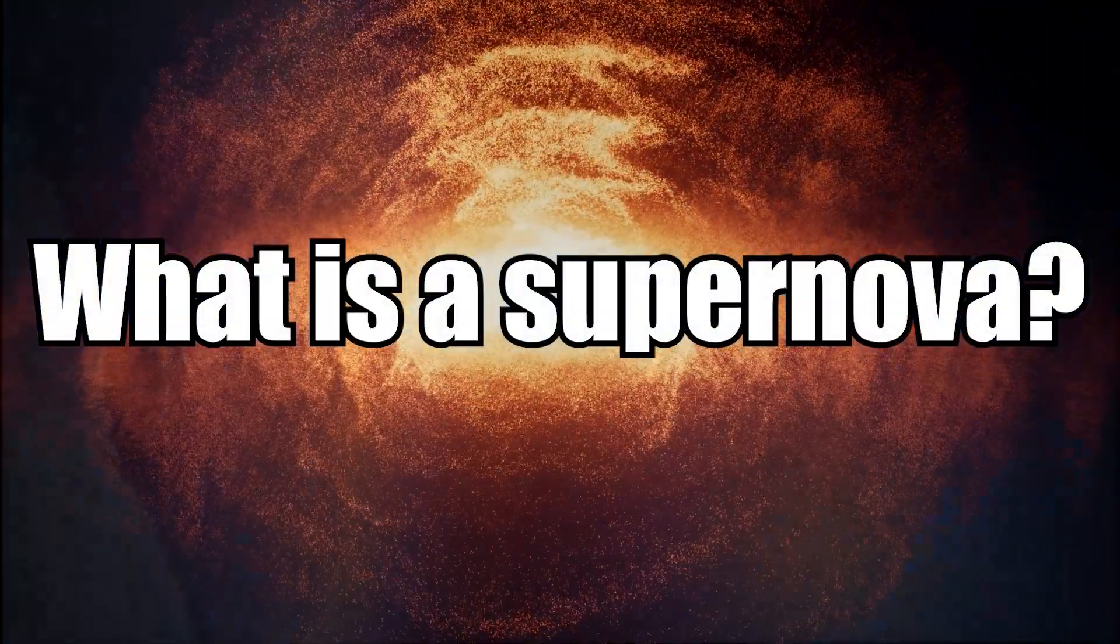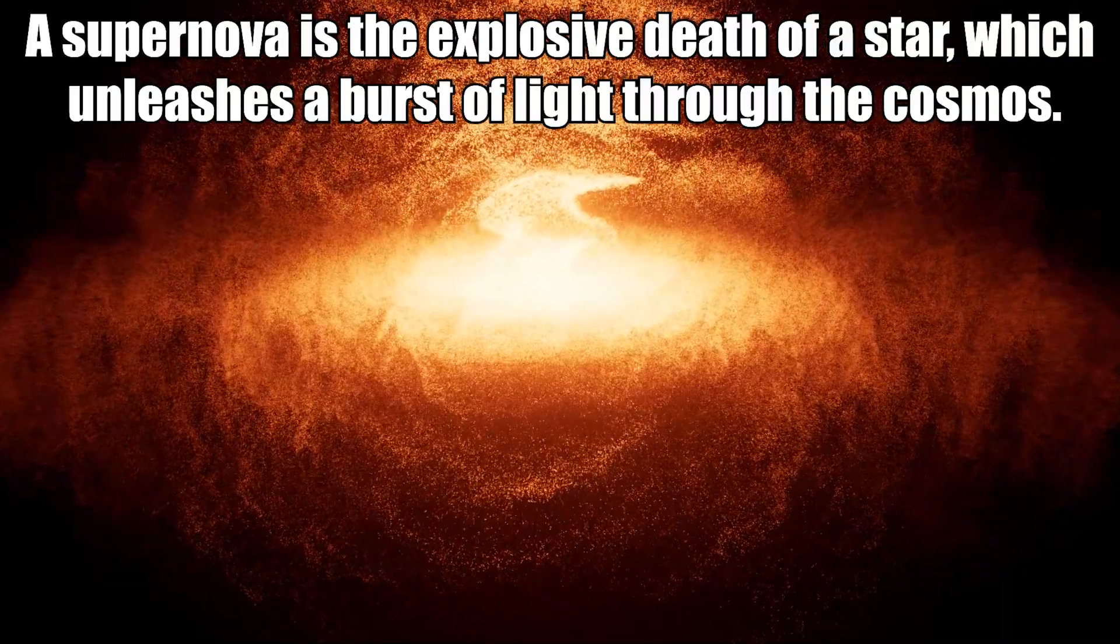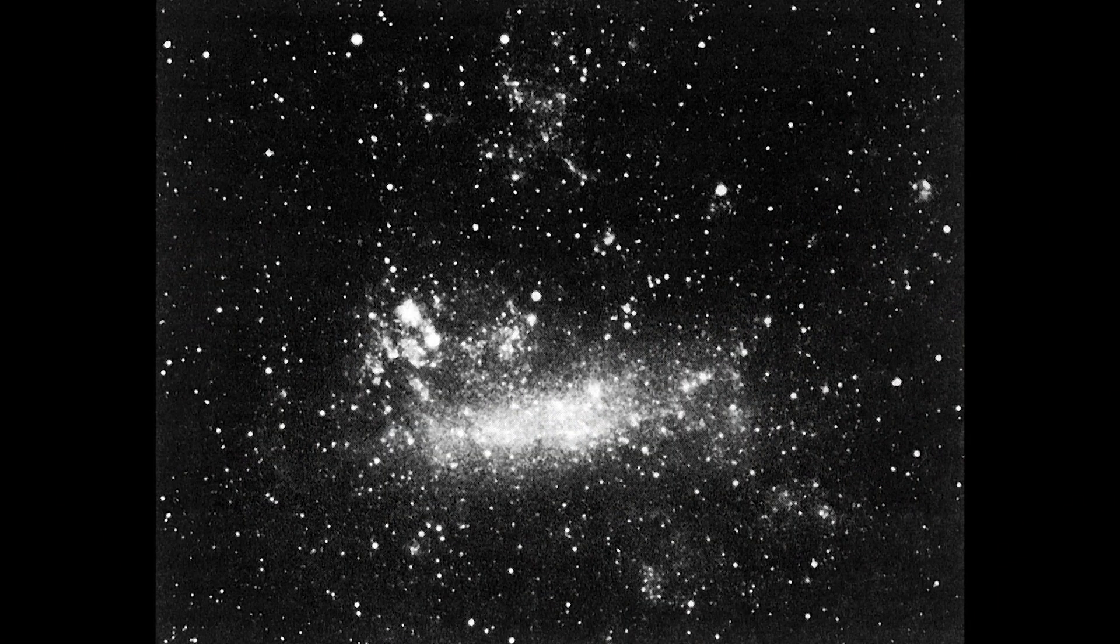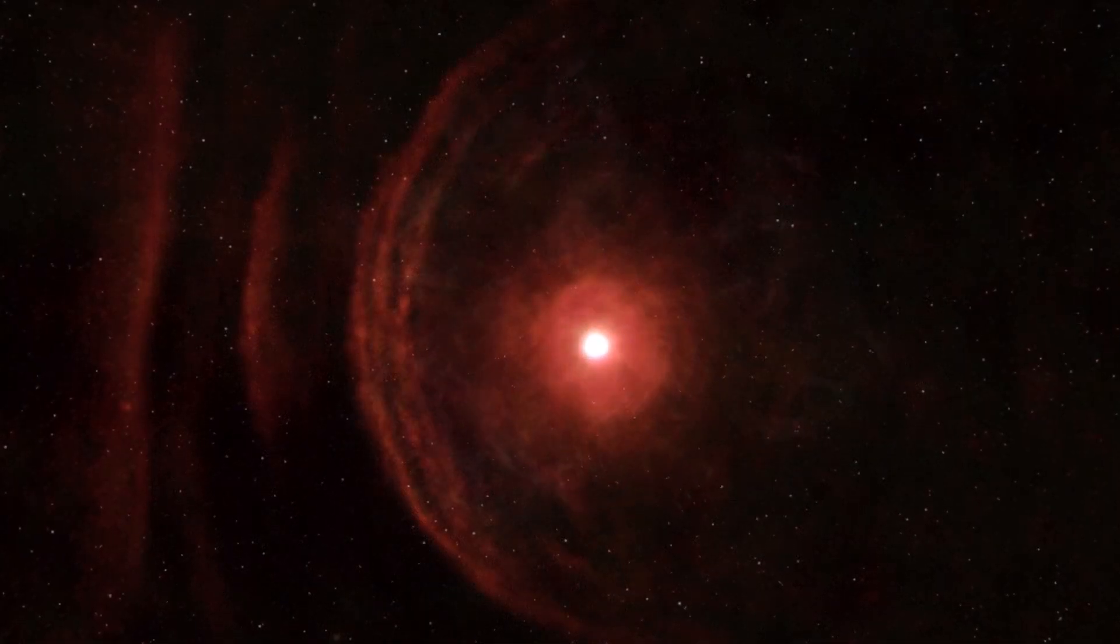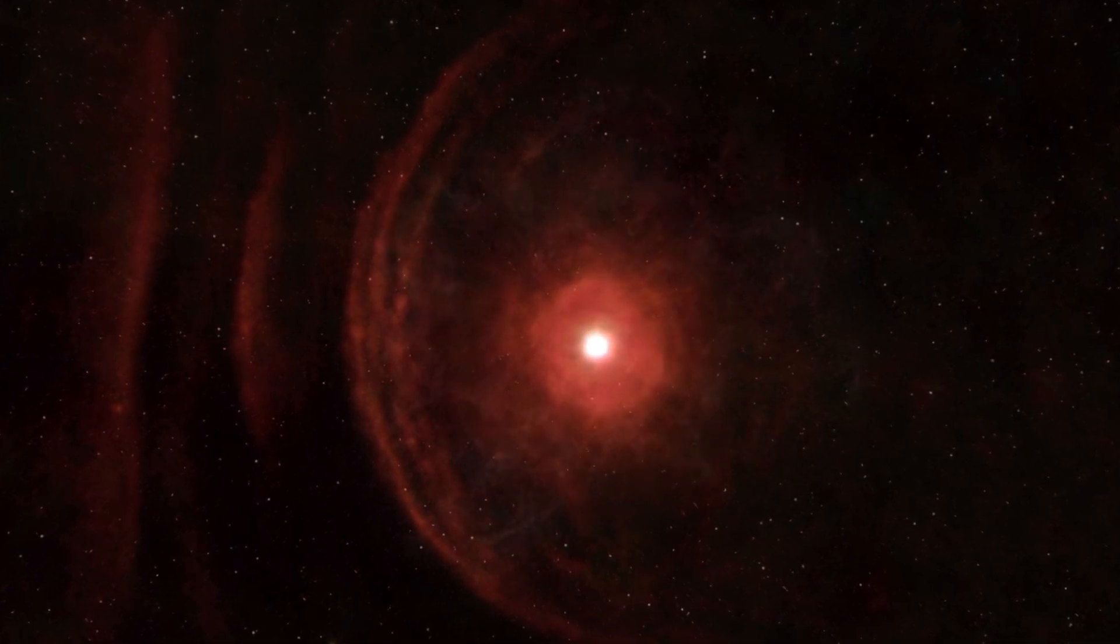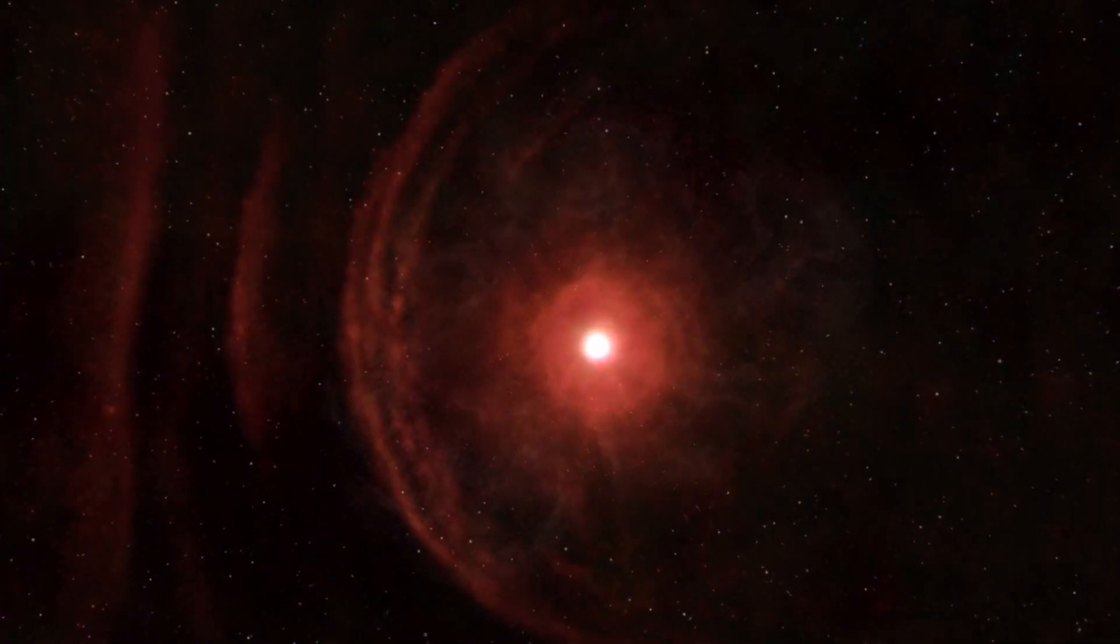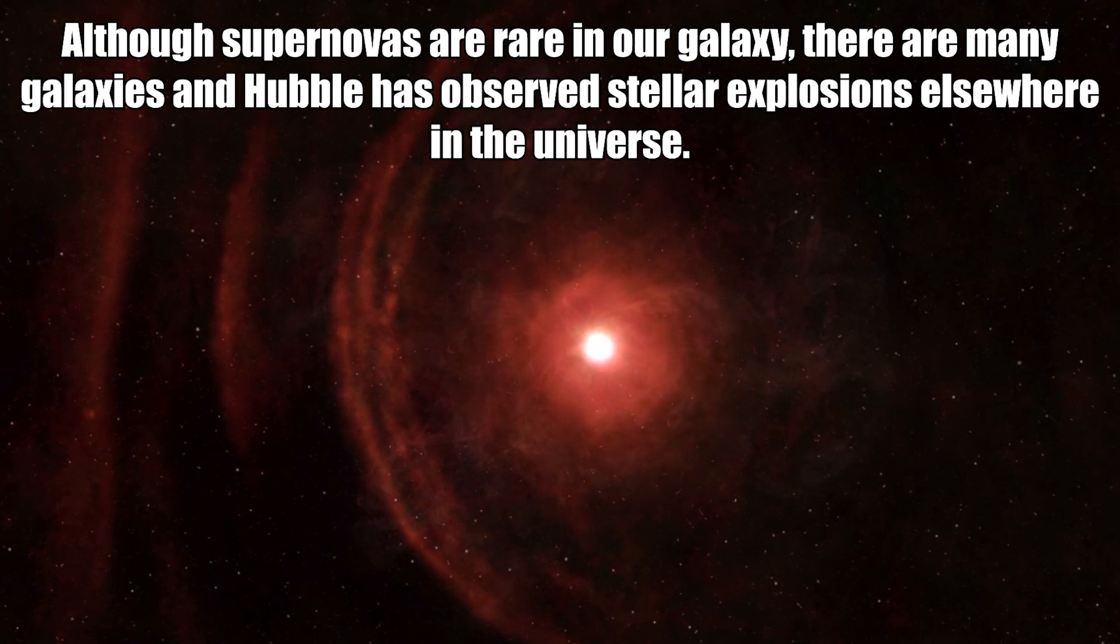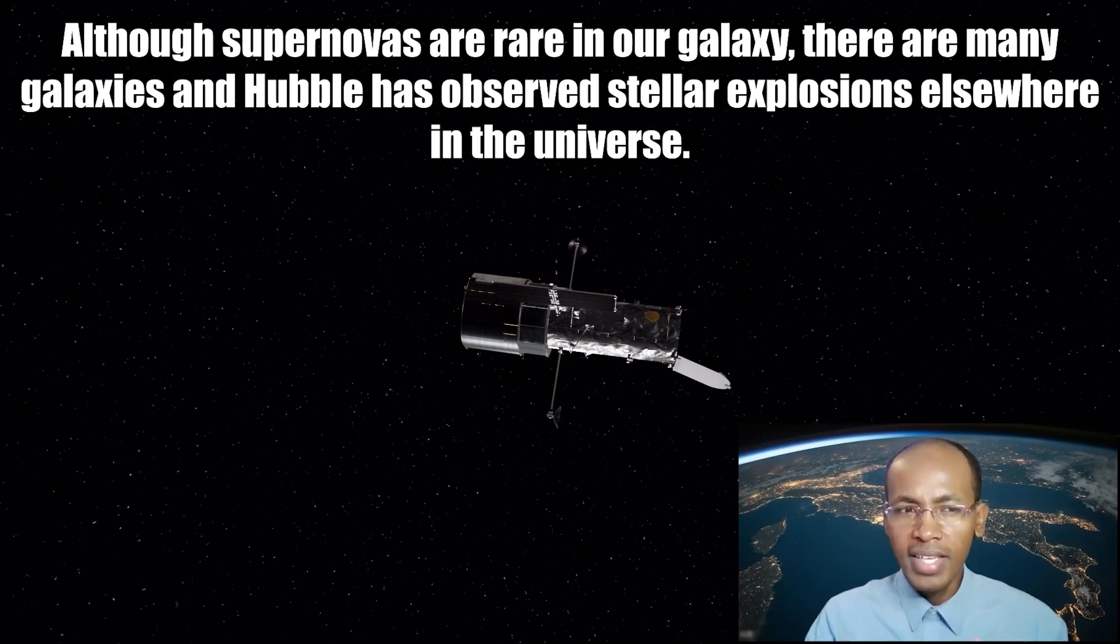Next question, what is a supernova? A supernova is the explosive death of a star, which unleashes a burst of light throughout the cosmos. In 1987, a supernova observed in the nearby Large Magellanic Cloud, an irregular galaxy neighboring our Milky Way galaxy, was the first one visible to the eye since 1604. And the Hubble Space Telescope was not yet in orbit when the explosion was observed, but it has since made dramatic observations of the expanding gaseous remains of that star. Although supernovas are rare in our galaxy, there are many galaxies and the Hubble Space Telescope has observed stellar explosions elsewhere in the universe.